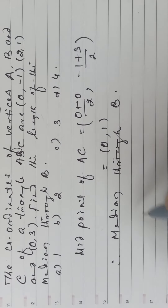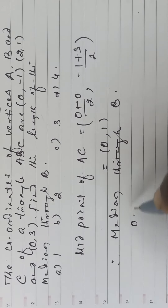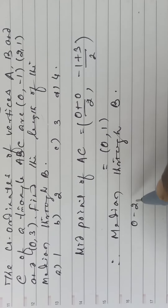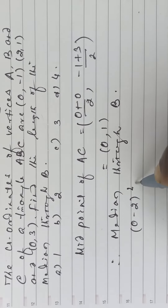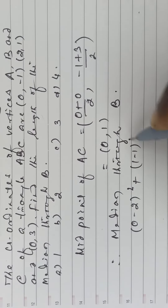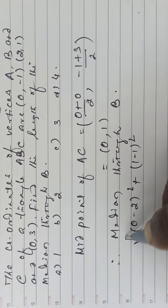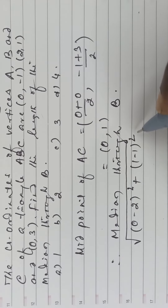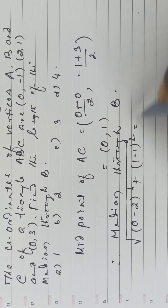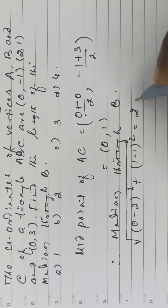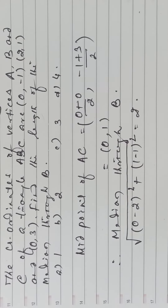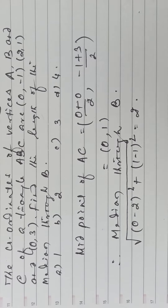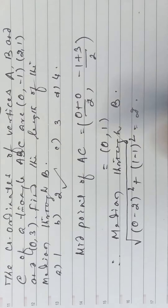Using the distance formula: the square root of (0 minus 2) whole square plus (1 minus 1) whole square. That is 2. The answer is option B.